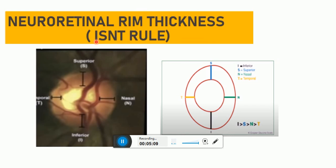In this rule, the inferior is the thickest. I means inferior; it is 18 percent thicker than the superior rim. S is superior. So inferior is followed by superior, then nasal, then temporal. This is a result of the peculiar arrangement of the RNFL axons of retinal ganglion cells.